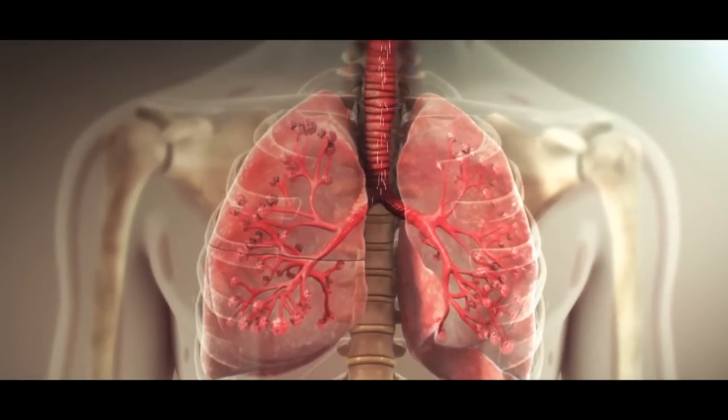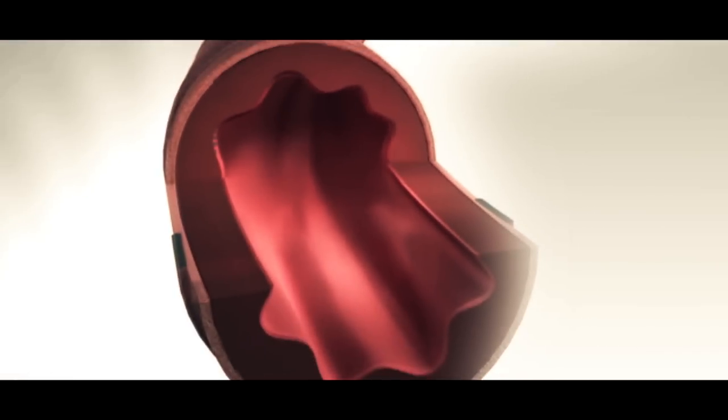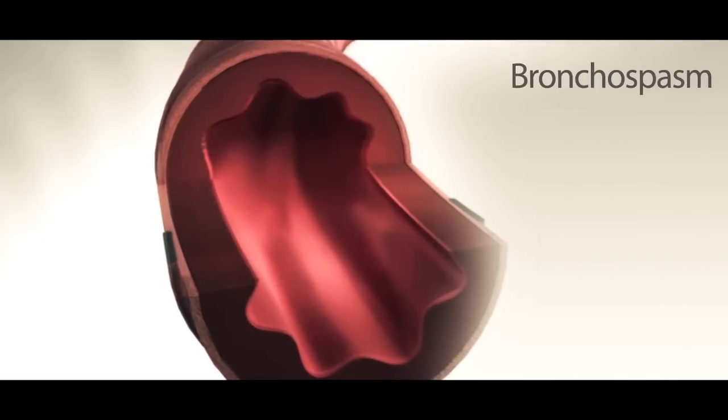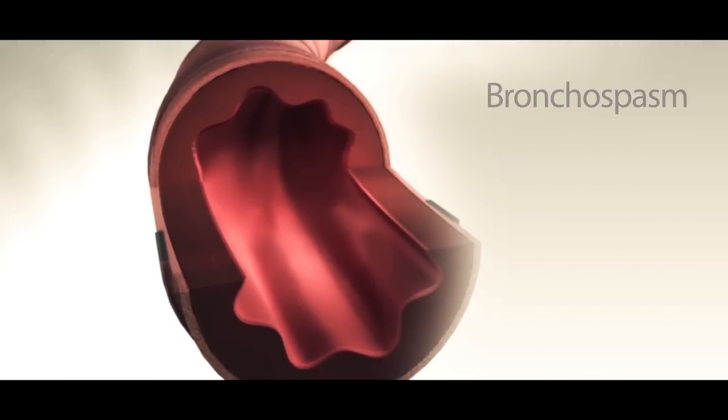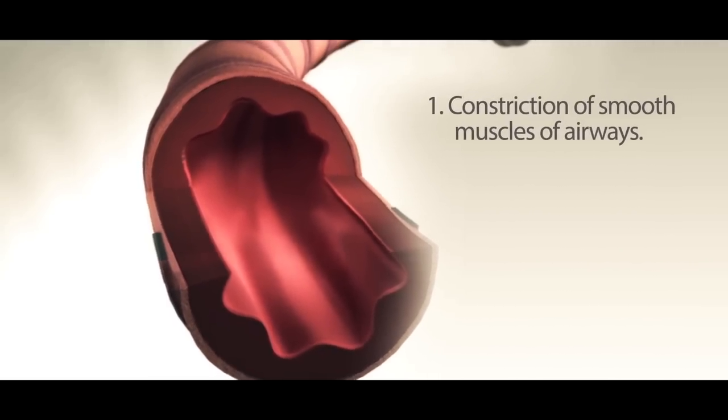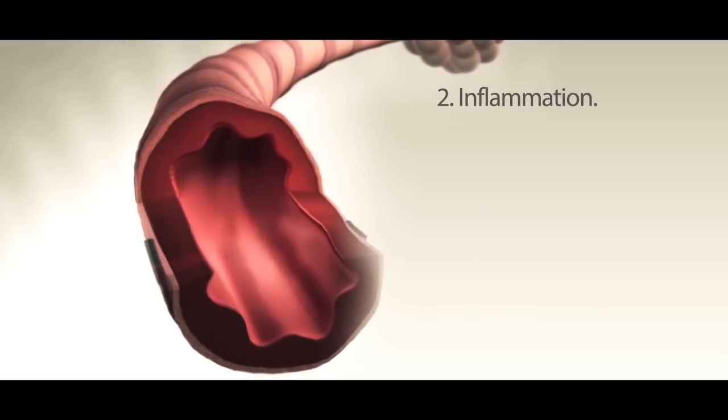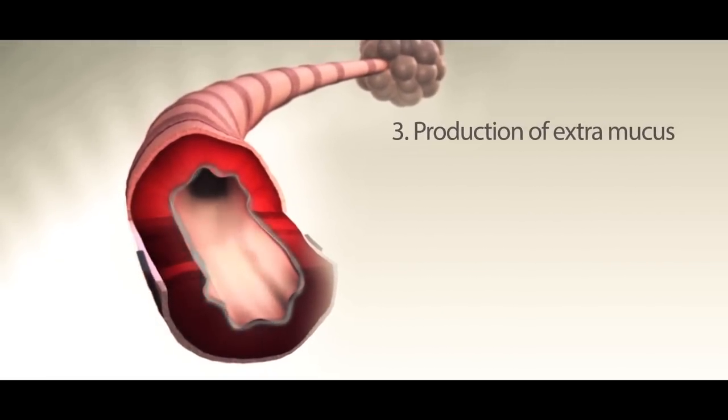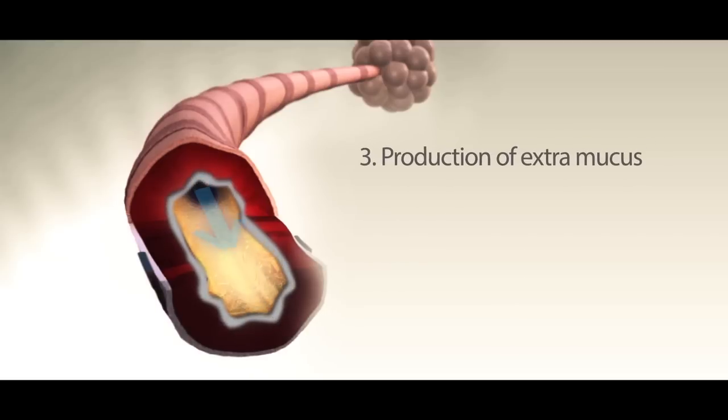In people with asthma, airflow is restricted due to narrowing of bronchi and bronchioles. Bronchospasm due to asthma is caused by three factors: constriction of smooth muscles around bronchi and bronchioles, swelling of cells in airways due to chronic inflammation, and production of extra mucus due to inflammation and asthma triggers.